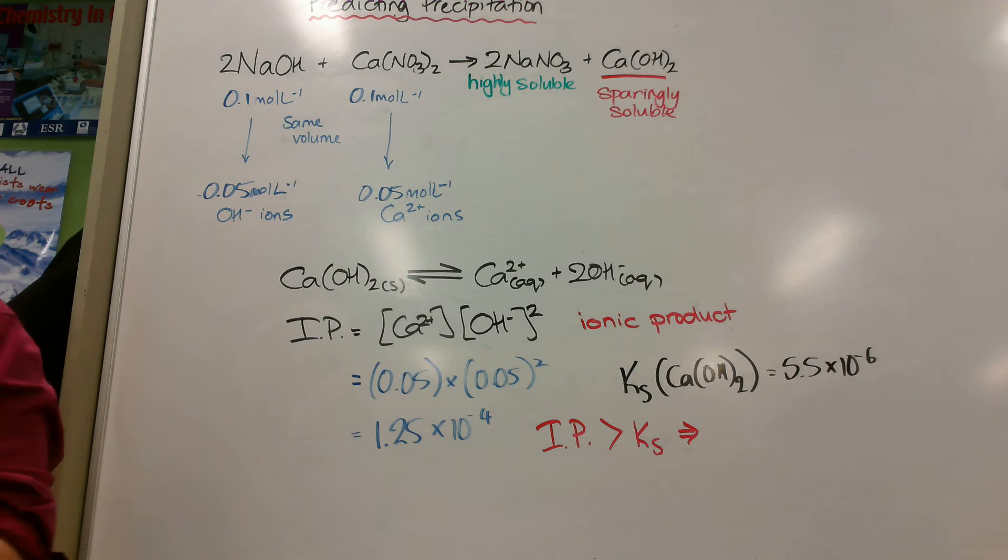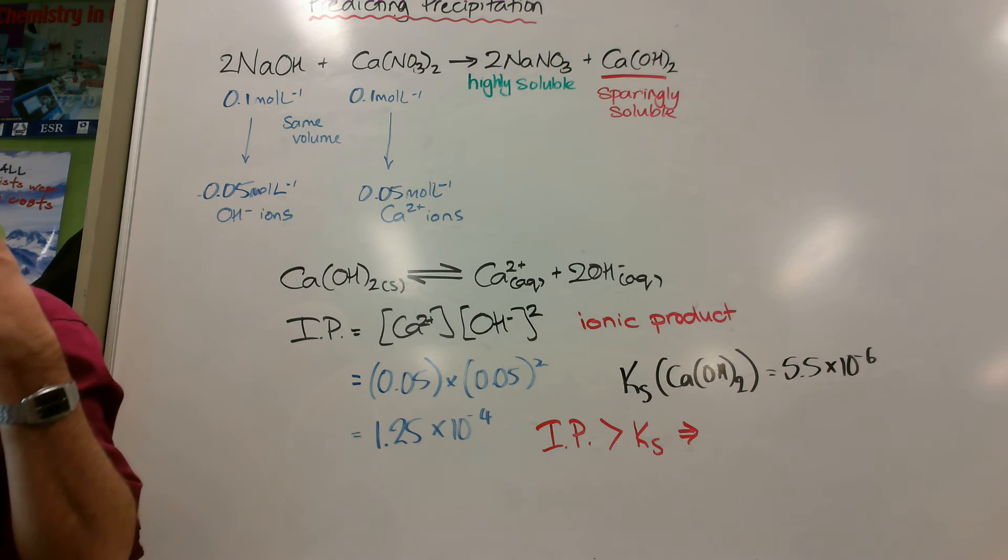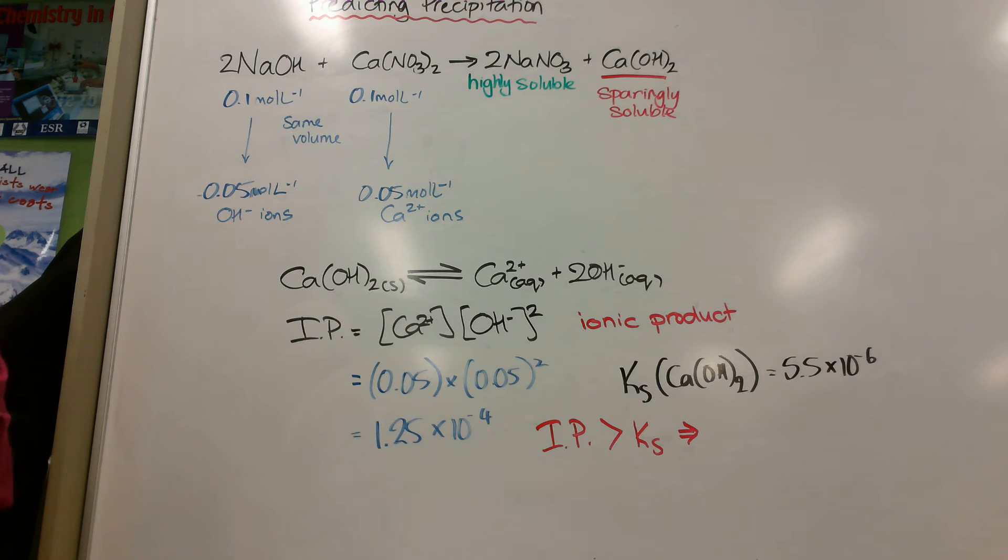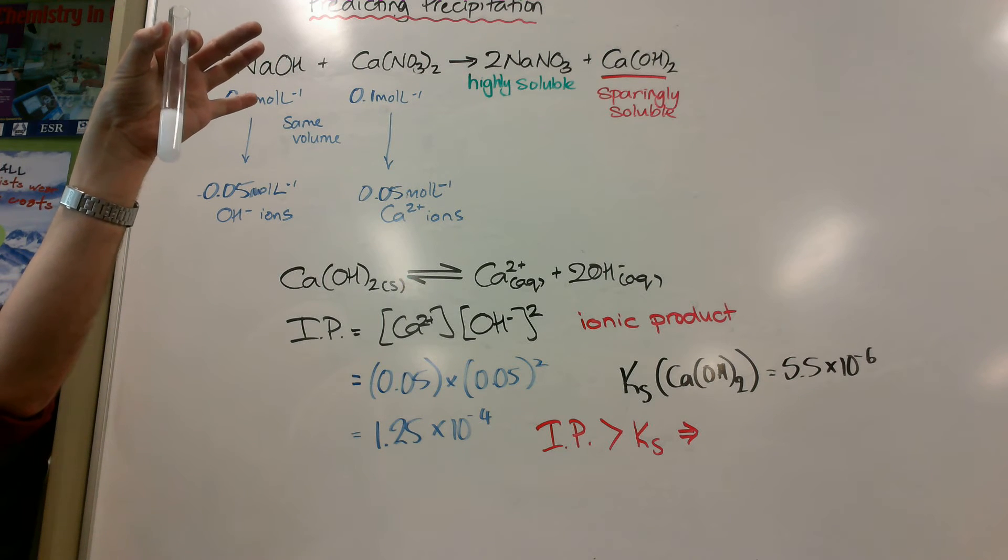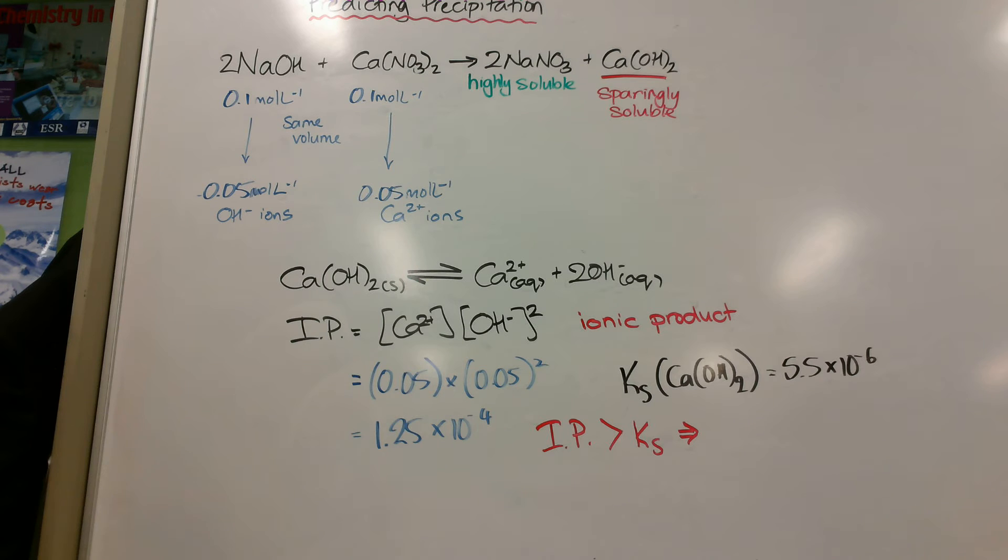Well, yesterday we learned a thing called KS, solubility product. Now we're going to learn a thing called ionic product. The nice thing is they have the same formula. They just have different values. And it's what the ionic product is with respect to the KS that tells us should that have precipitated or not. So I'll walk you through that.